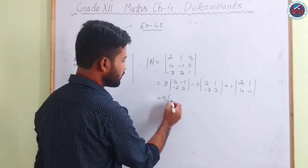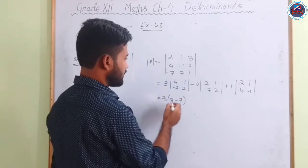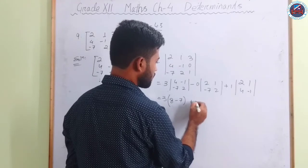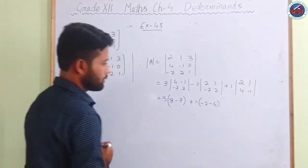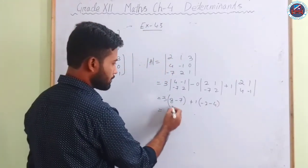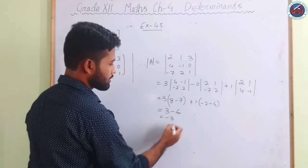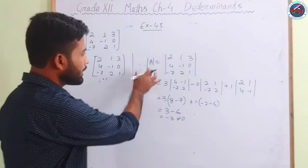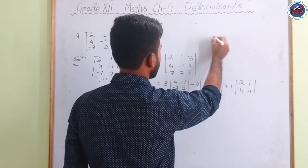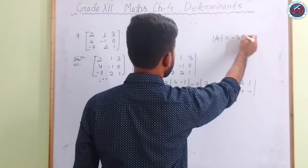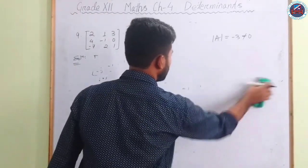Computing: for element 3, the minor determinant = (4)(2) − (−1)(−7) = 8 − 7 = 1, so contribution is +3×1 = 3. The 0 term vanishes. For element 1, the minor determinant = (2)(−1) − (1)(4) = −2 − 4 = −6, so contribution is +1×(−6) = −6. Total: det(A) = 3 + (−6) = −3, which is not equal to 0.